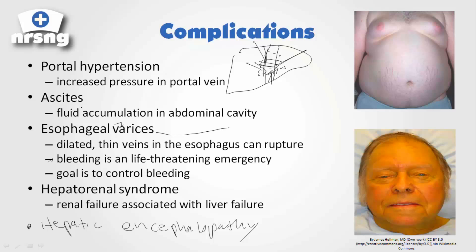As blood begins to shunt to other locations, one of the locations it likes to go is actually the esophagus. We have all these little tiny veins in our esophagus, and blood begins to shunt away from the liver and goes into these little tiny veins. What happens is these little varices form — incredibly dilated veins in the esophagus. If that pressure builds up too much, remember these are very small, weak veins as opposed to your portal vein, so these can actually rupture.